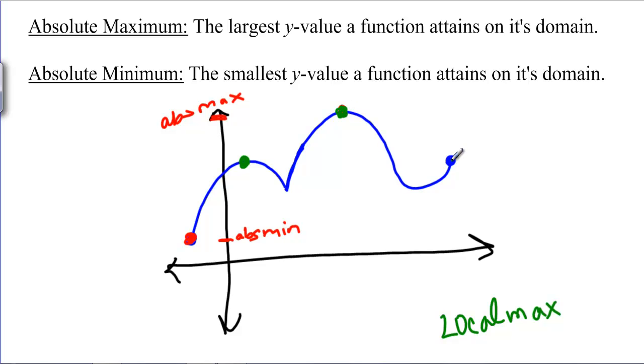This is sort of a local maximum but usually we don't treat endpoints as local maximums. Similarly, a local minimum is the lowest point nearby. This is a local minimum and this is also a local minimum.